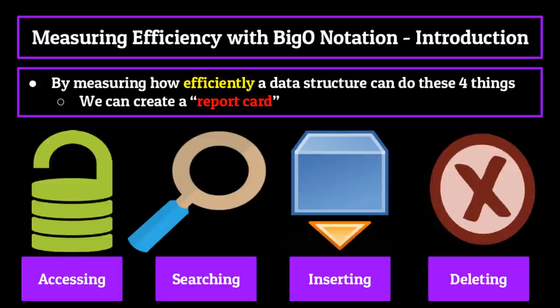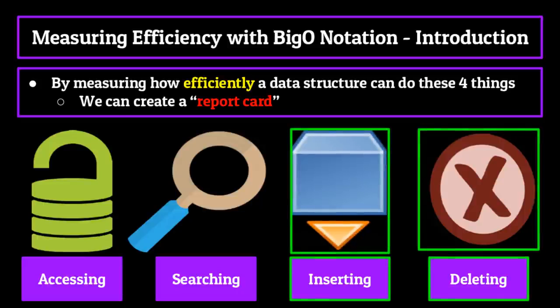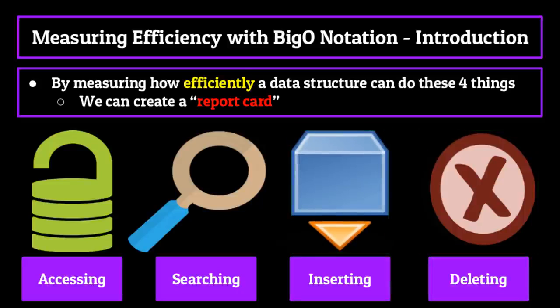If we need to store data that is easily accessible to the end user, we might choose a data structure which can access elements the quickest. Vice versa, if accessing elements isn't the most important thing to us, but we need a data structure which can be easily added to and deleted from, we would go for one which is most efficient in that specific functionality. By looking at a data structure's report card, we can get a quick sneak peek at what they're good at and what they are bad at. The four criteria — accessing, searching, inserting, and deleting — are all scored using big O notation time complexity equations.